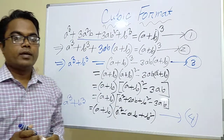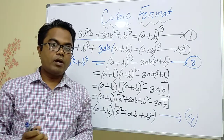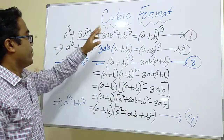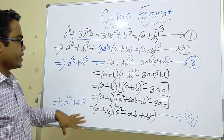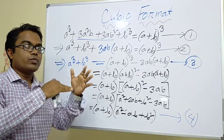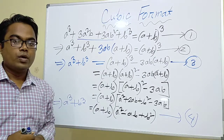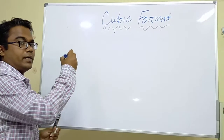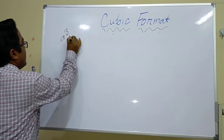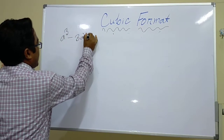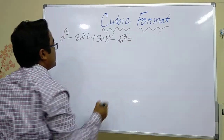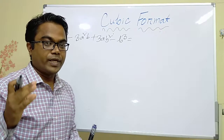These two are the (a + b) whole cube formulas, and this is the corollary form of a cube plus b cube, and this is the factorization formula for a cube plus b cube. Have you got my points? I hope so. This is the plus format — meaning (a + b) whole cube and a cube plus b cube. Similarly, with the same procedure, we can do (a − b) whole cube. Here: a cube minus 3a squared b plus 3ab squared minus b cube.